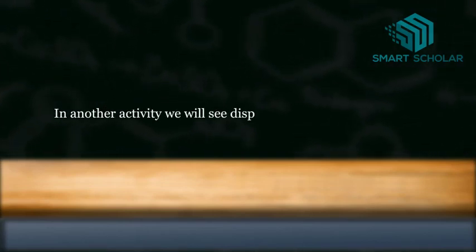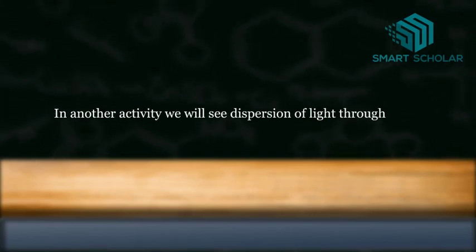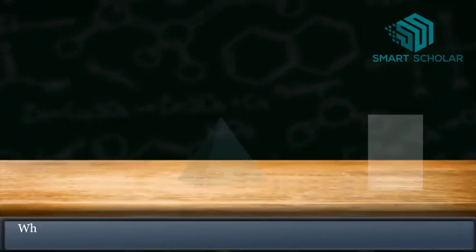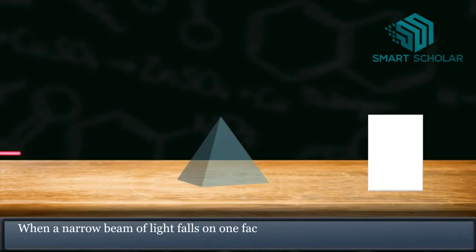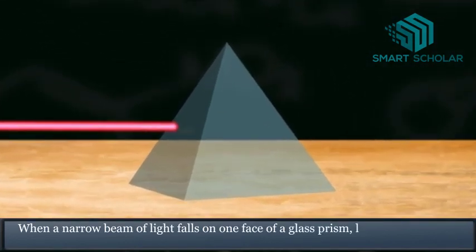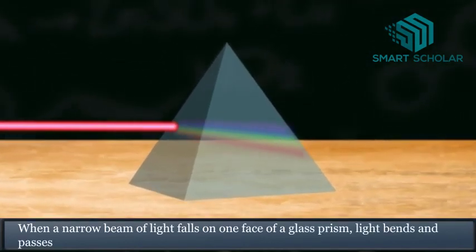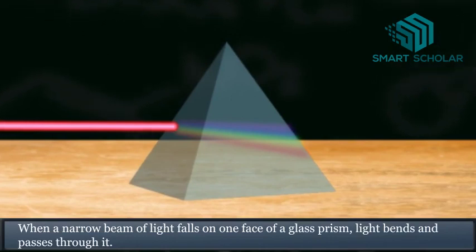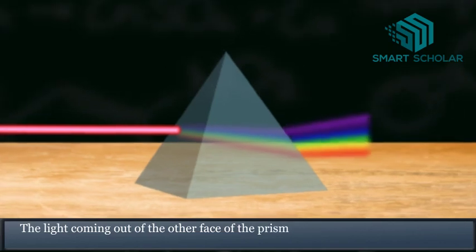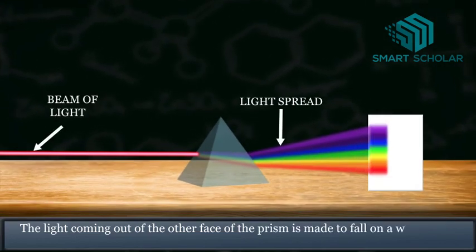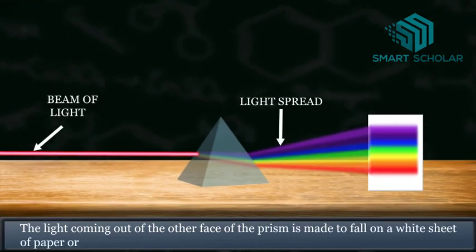In another activity, we will see dispersion of light through a prism. When a narrow beam of light falls on one face of a glass prism, light bends and passes through it. The light coming out of the other face of the prism is made to fall on a white sheet of paper or a wall.